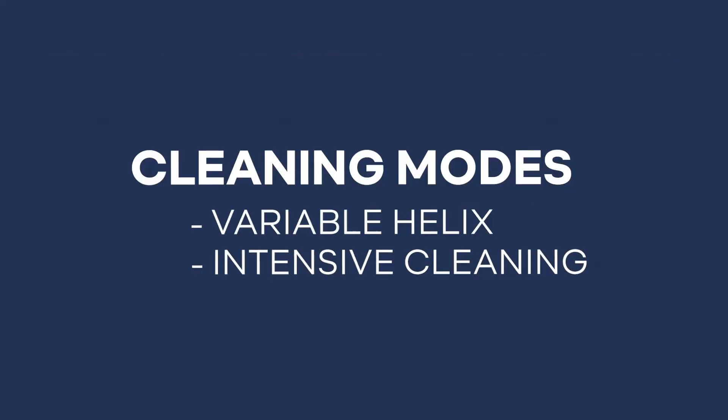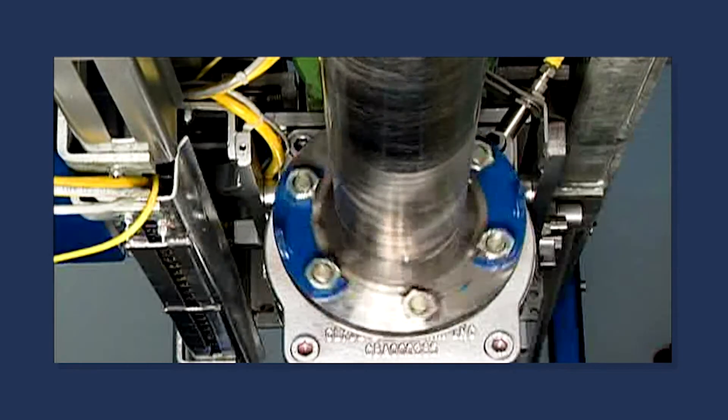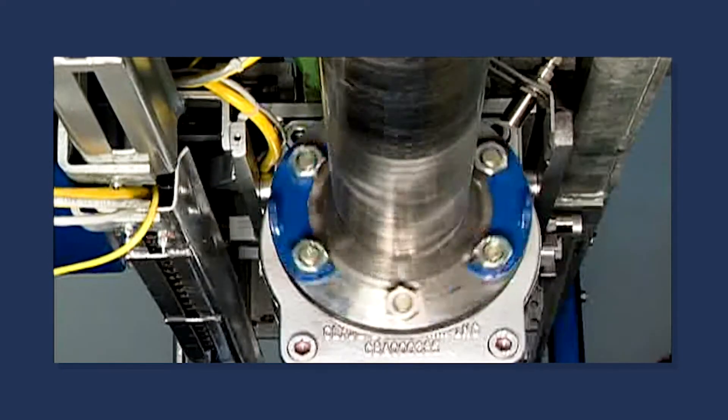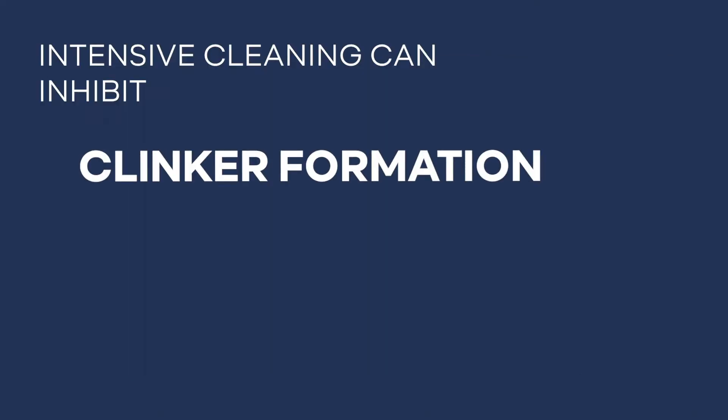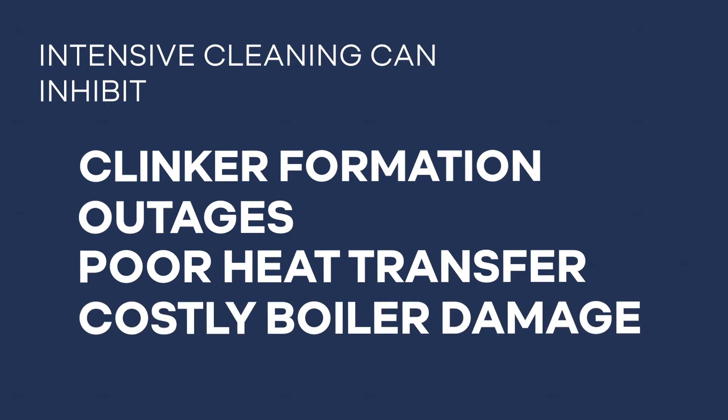Intensive cleaning: To remove tenacious slag normally left by traditional soot blowers, the smart soot blower's lance can be virtually held in place while rotation continues. This intensive cleaning can inhibit clinker formation, reducing outages, poor heat transfer, and costly boiler damage.